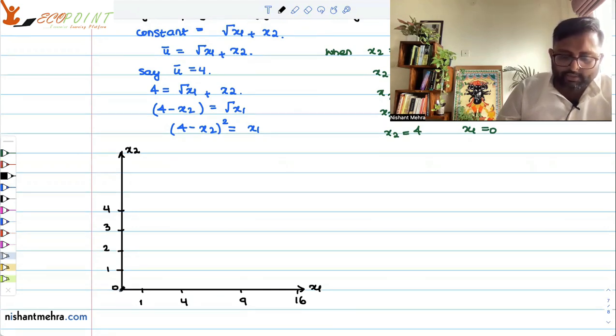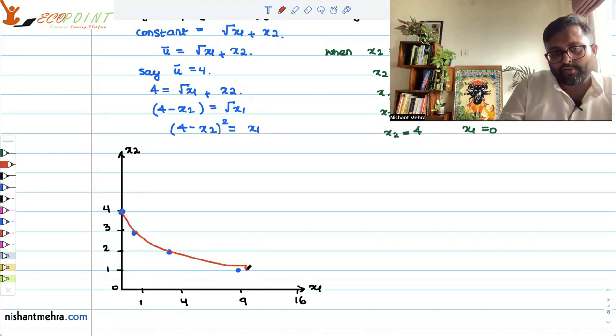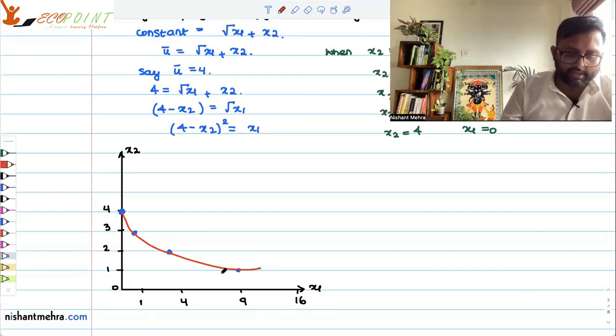So your points are: x1 equals 0, x2 equals 4, this is one point. Then x1 equals 1, x2 equals 3, this is another point. x1 equals 4, x2 equals 2. And then x1 equals 9, x2 equals 1 and so on and so forth. The idea is that you will have such kind of an indifference curve, something like this.